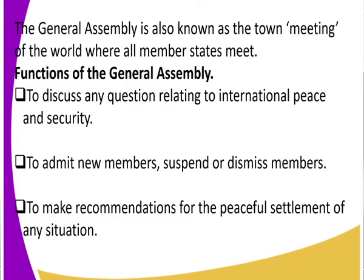The functions of the General Assembly include: first, to discuss any question relating to international peace and security. For example, the United Nations recently called a General Assembly to discuss the current political developments in Uganda, which is something threatening international peace and security. When there is anything threatening international peace, they get to meet and deliberate on those issues.